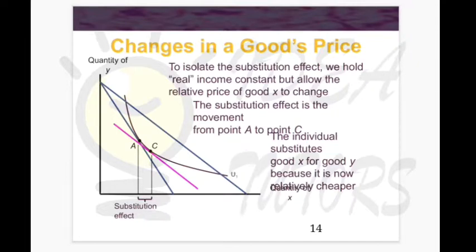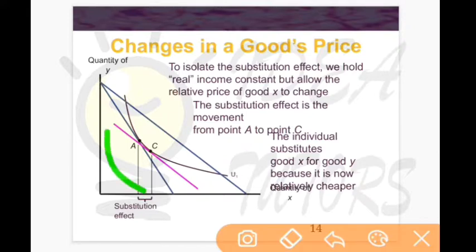To isolate the two effects, let's look at the substitution effect first. We assume that real income is constant — though a change in price does change real income, for substitution effect we hold real income constant and allow only relative price to change. The substitution effect is the movement from point A to point C. At point C, there is a new budget line shown in pink.